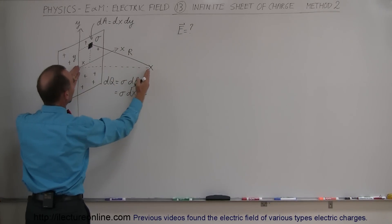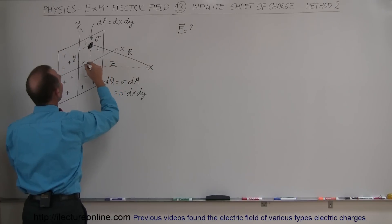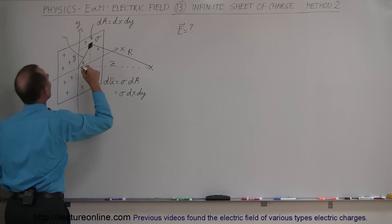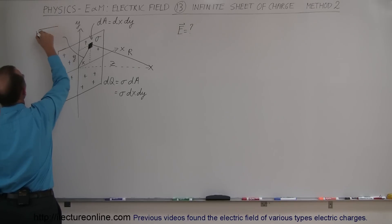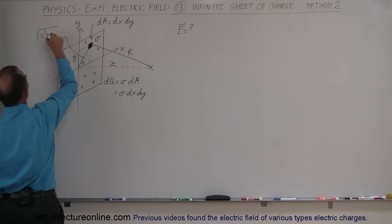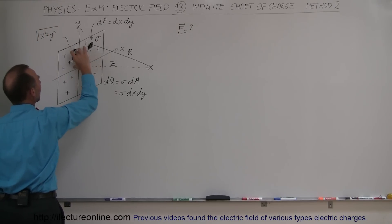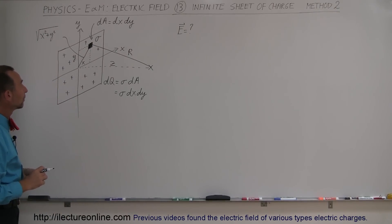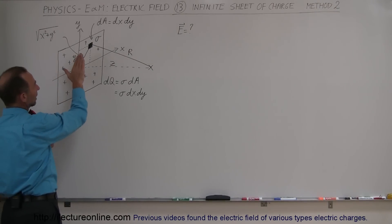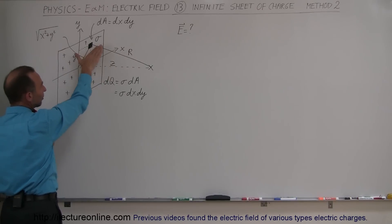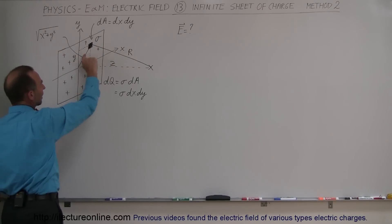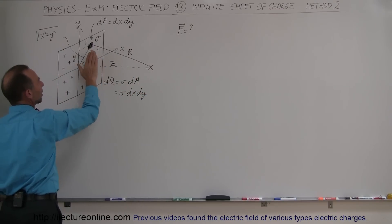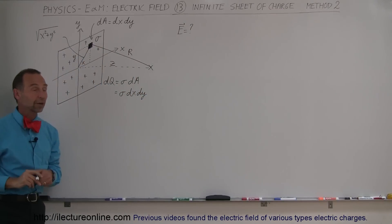Notice that this distance z is the perpendicular distance from the sheet to the point of interest. The horizontal distance from the element to the point directly below the point of interest is equal to the square root of x squared plus y squared, because x and y are the two legs, so the hypotenuse is the square root of the sum of their squares. So we have a triangle that leans backward: the height is z, the base is that horizontal distance, and r is the hypotenuse.